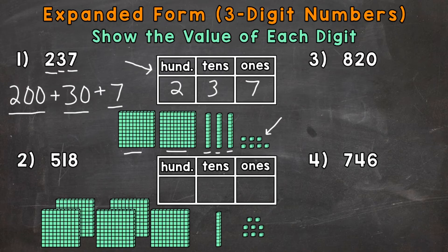So let's go on to number 2 where we have 518. So we have a 5 in the hundreds place, a 1 in the tens, and an 8 in the ones.